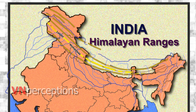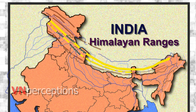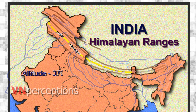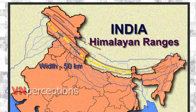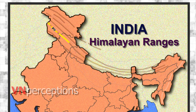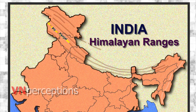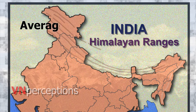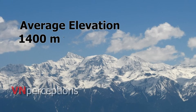Next is the Lesser Himalayas or Himachal Himalayas. The Lesser Himalayas lies to the south of Himadri. The altitude varies between 3,700 and 4,500 m and the average width is 50 km. It consists of the Pir Panjal range, which forms the longest and the most important range. Next is the Dhauladhara range and the Mahabharata range — these three are the important ranges lying in the Lesser Himalayas. The Pir Panjal range is the largest sub-range of Lesser Himalayas.